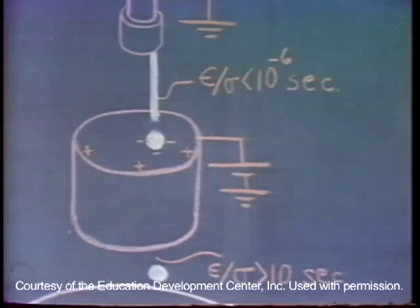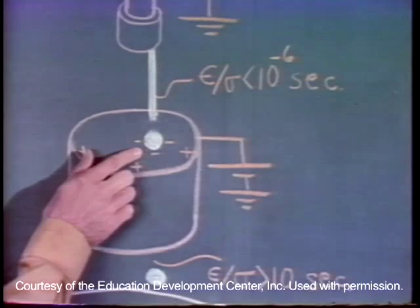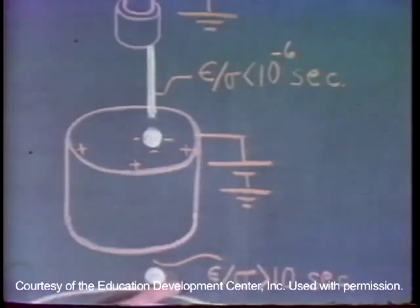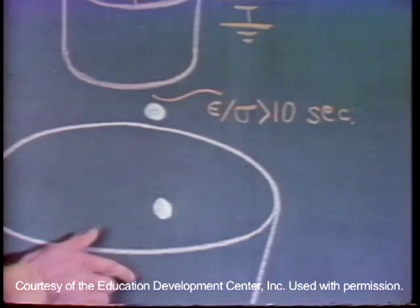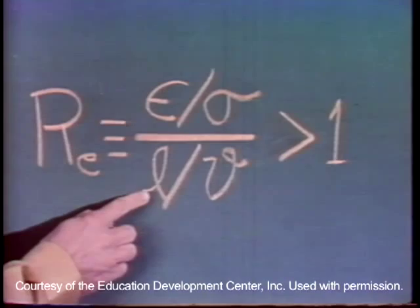The relaxation time in tap water is far less than a microsecond, which gives plenty of time for charge to accumulate on the drop as it forms. For the free drop, the relaxation time of the air is much greater than a second — enough time for the drop to reach the pail with its charge. The electric Reynolds number based on the properties of the air, the distance of travel, and the drop velocity is large.